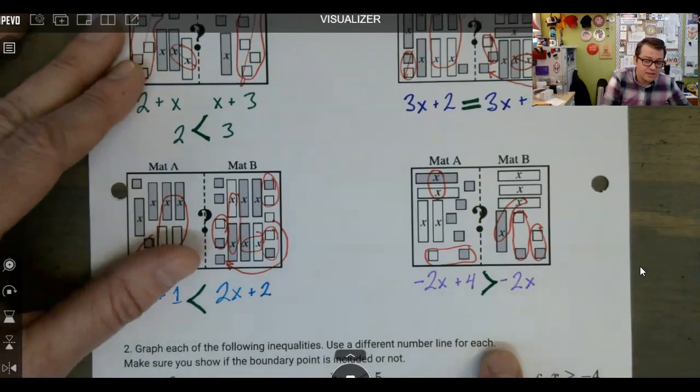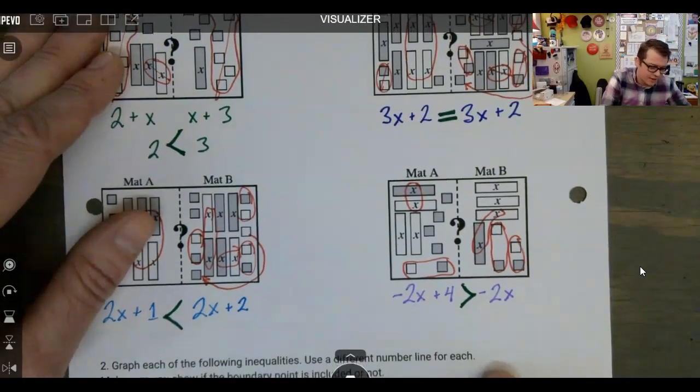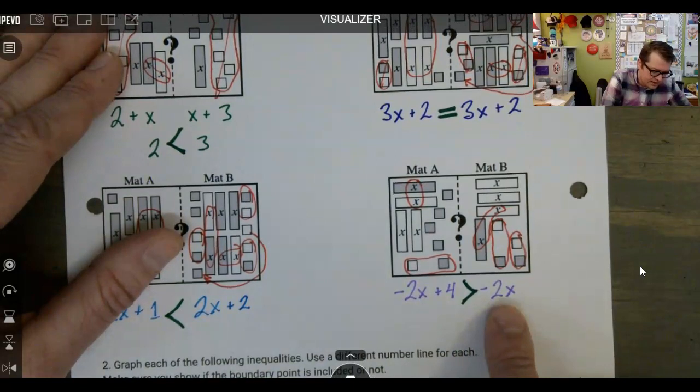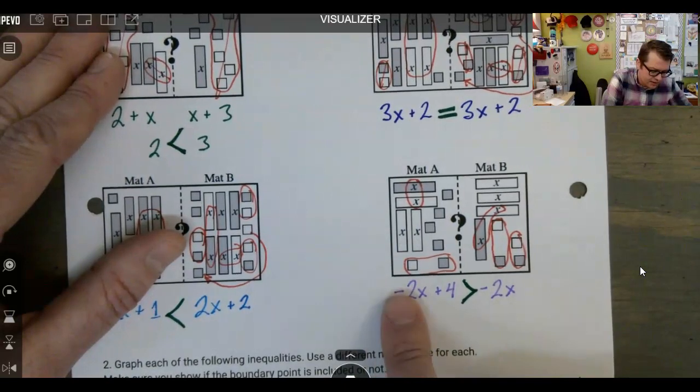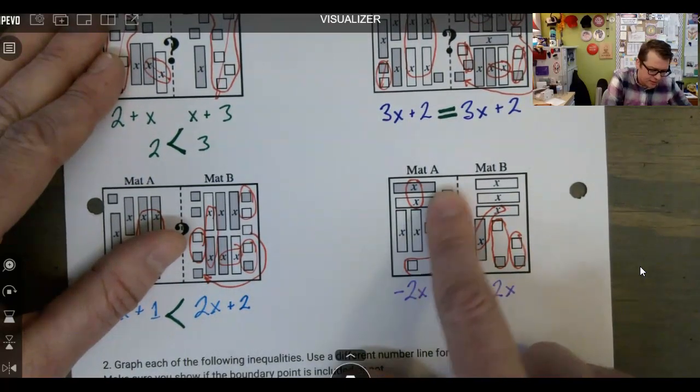The fourth one here is the only one that comes out to be greater than because we end up with just negative 2X on the right mat, mat B. And on mat A, we end up with negative 2X and four extra positives.